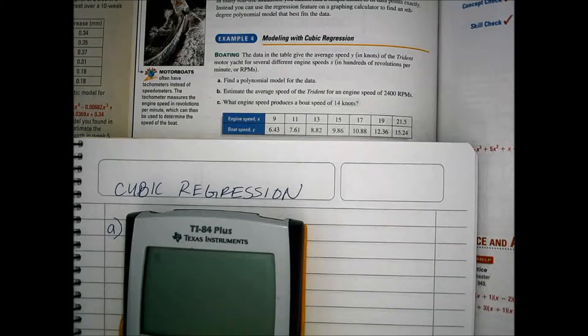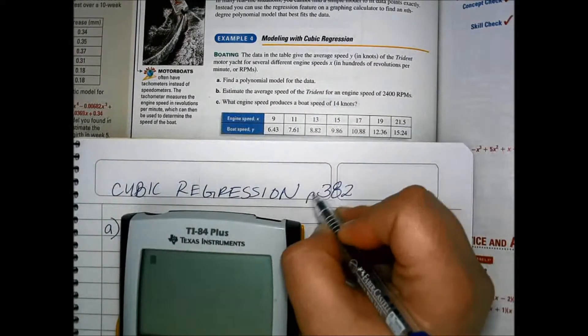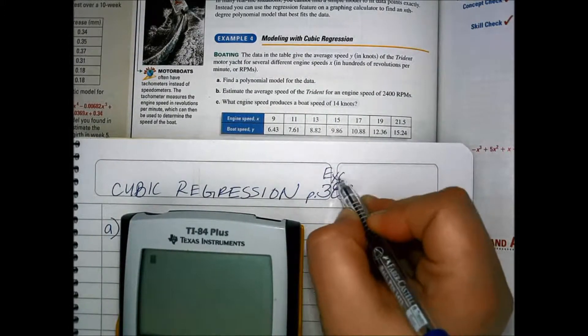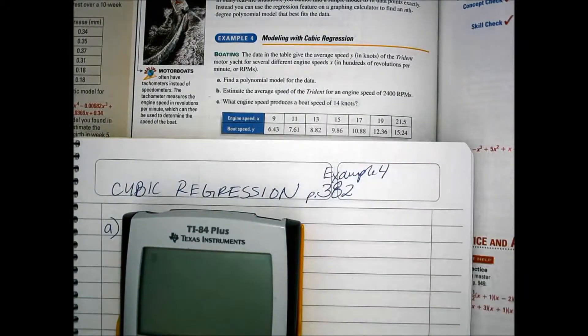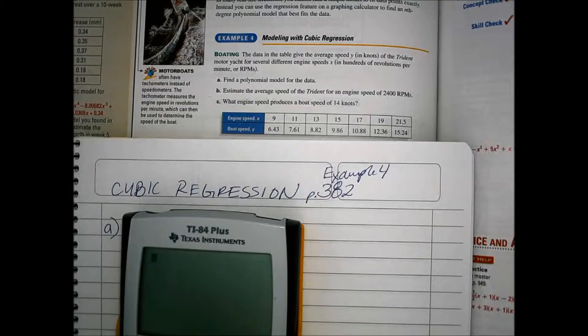Here is an example of cubic regression using example 4 from the book on page 382. The data in the table gives the average speed y in knots of the Trident motor yacht for several different engine speeds in hundreds of revolutions per minute or RPMs.